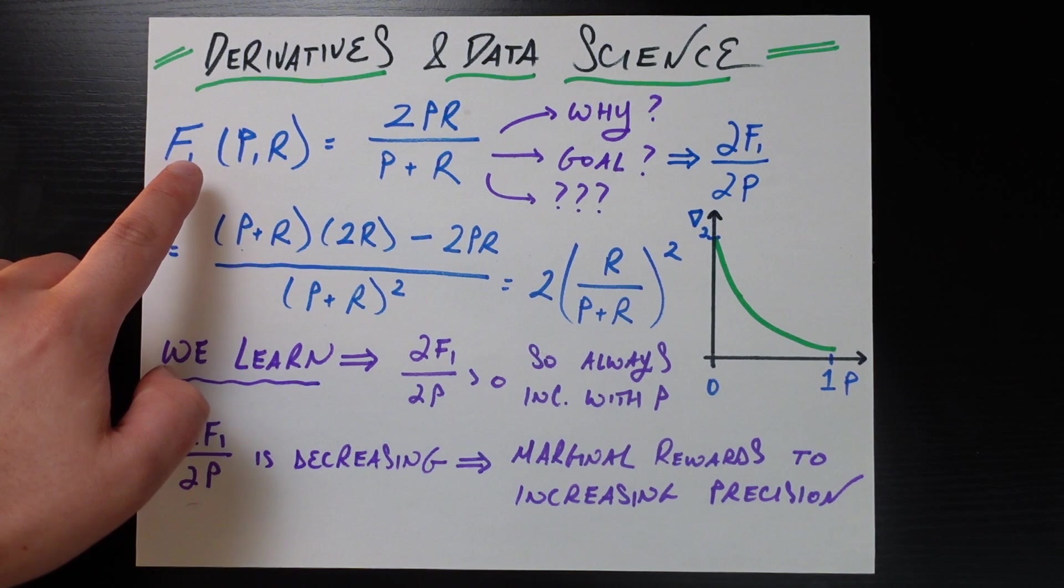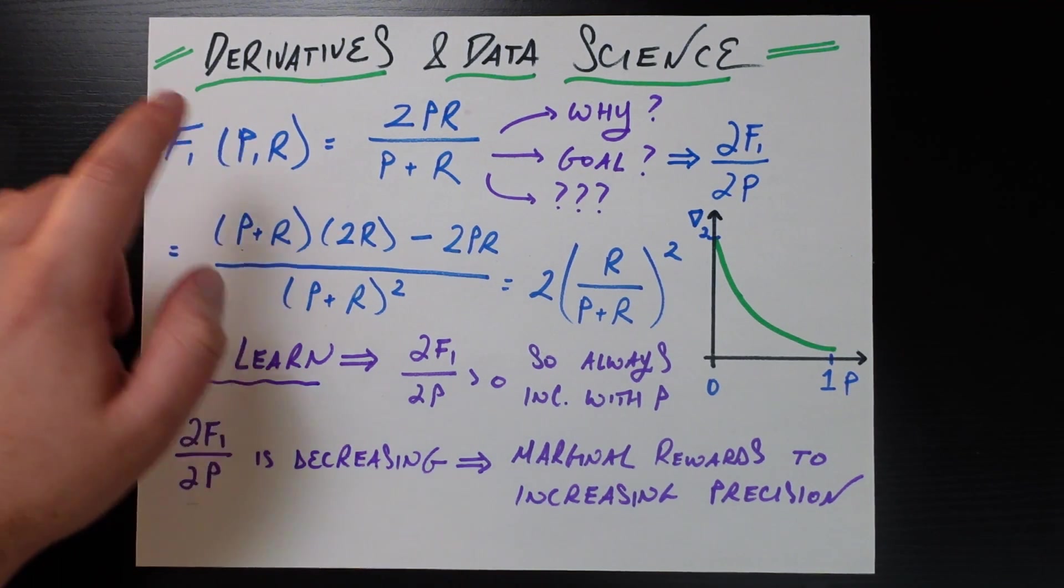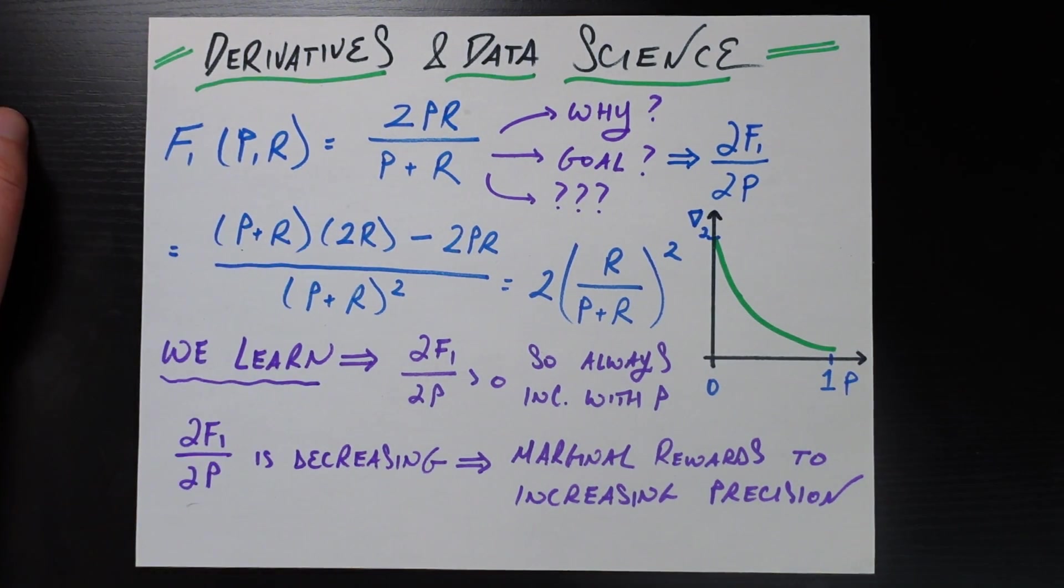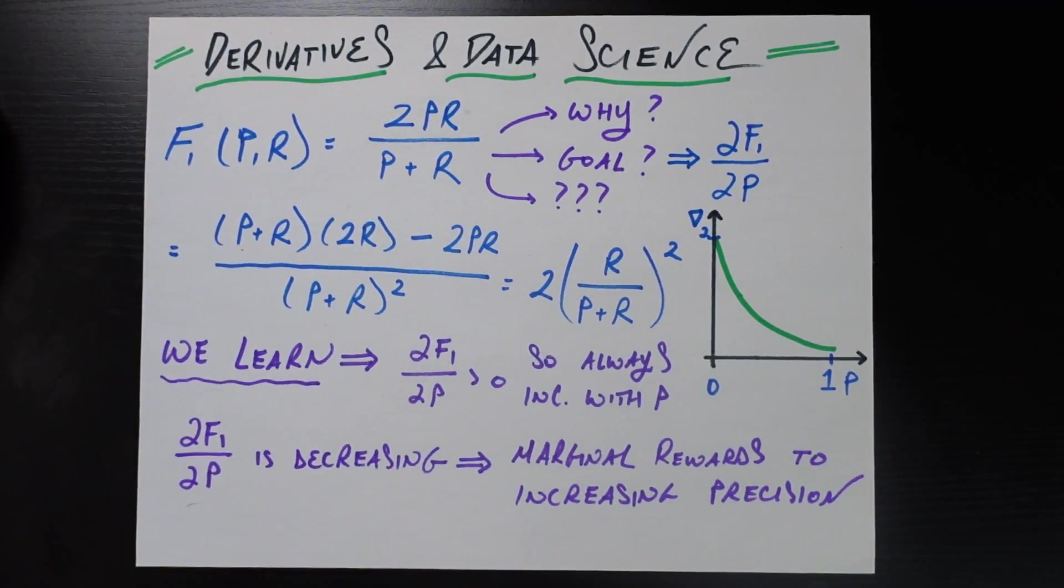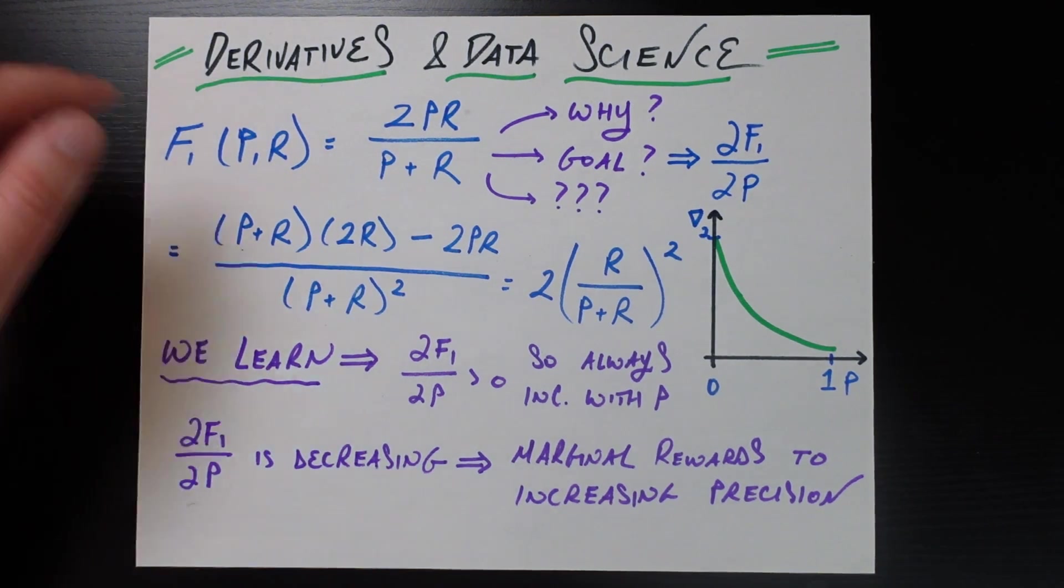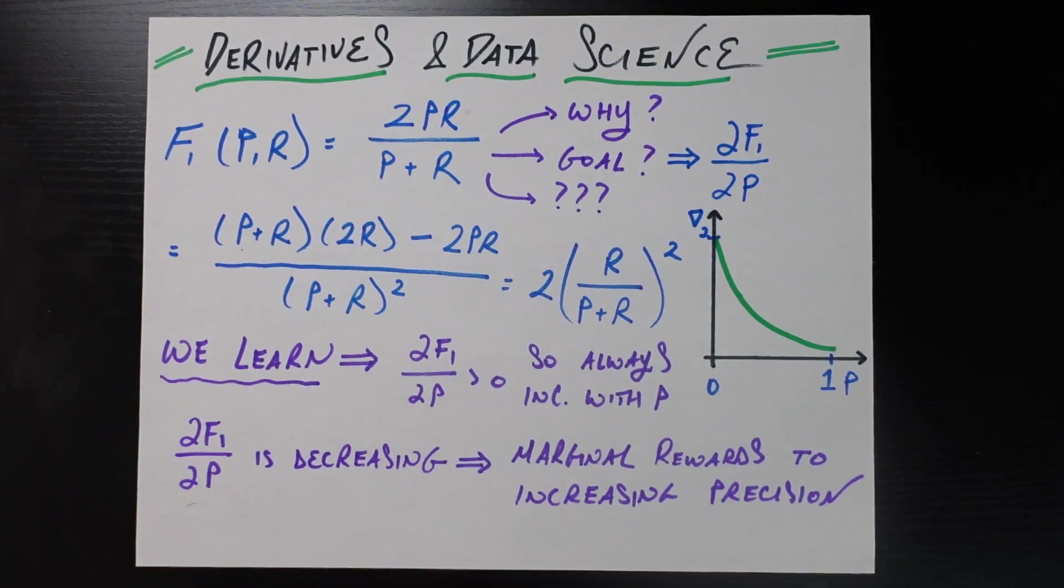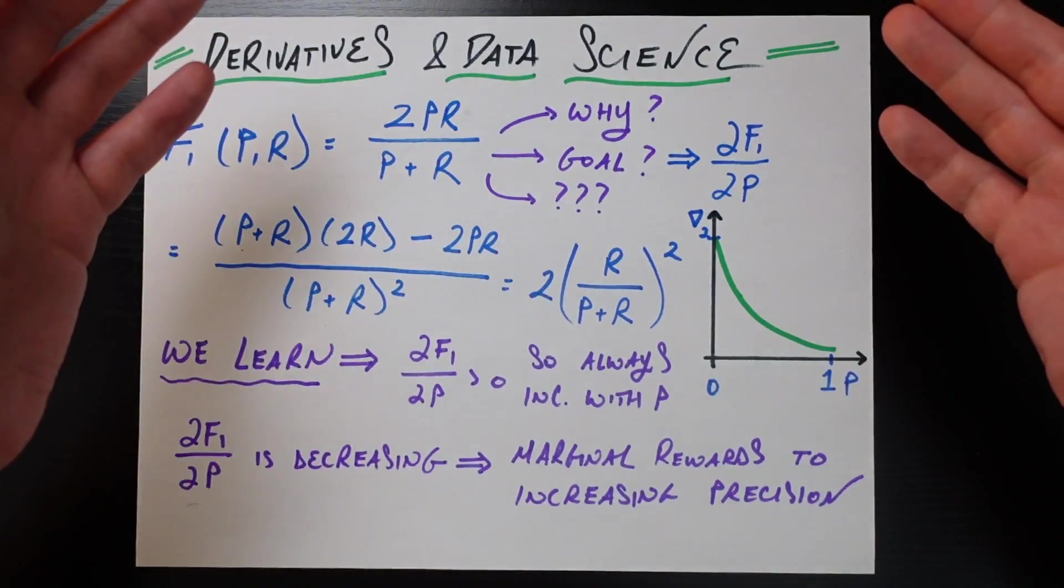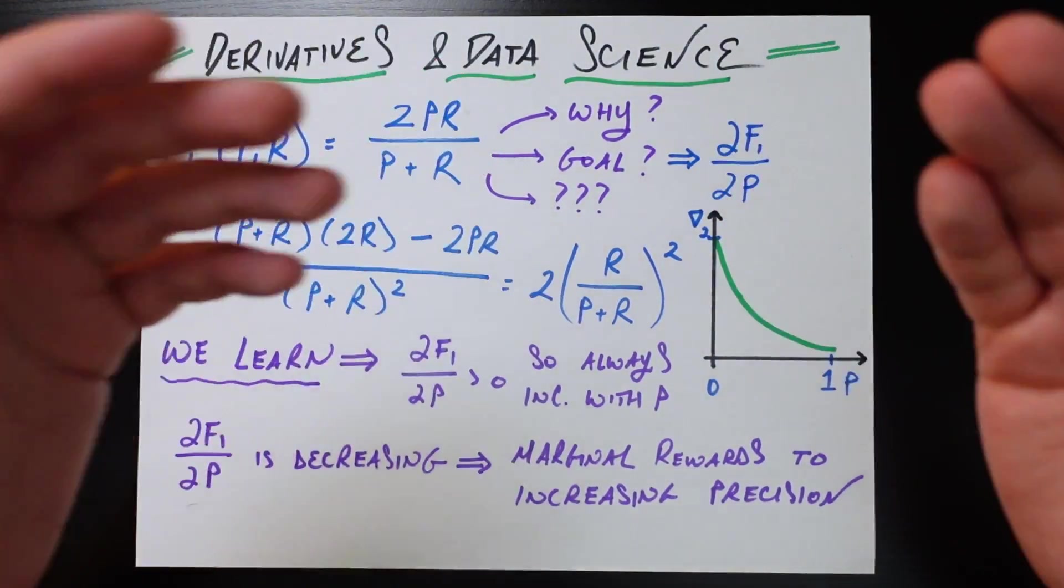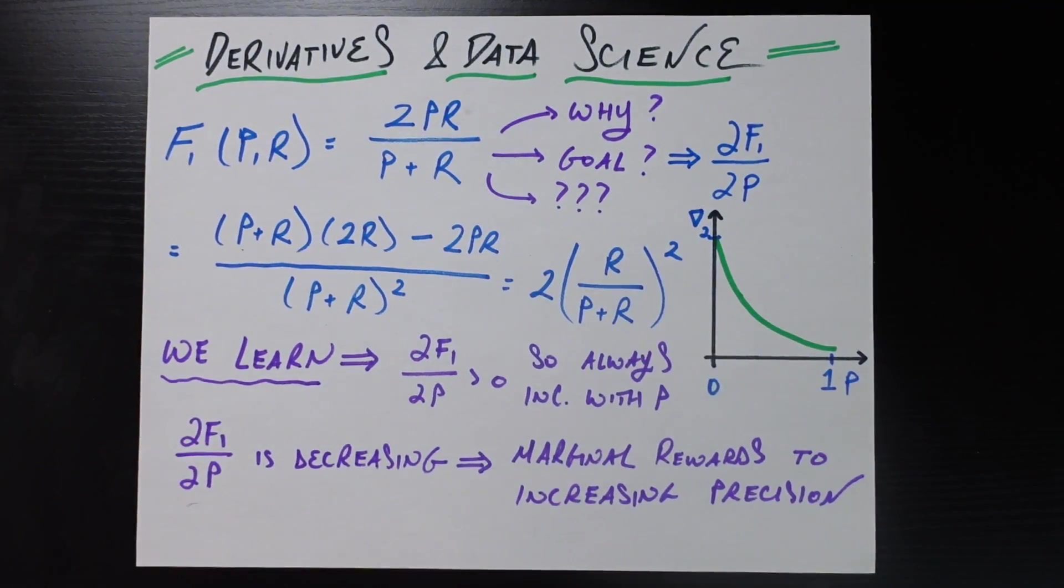And it's given by the F1 score as a function of precision and recall in some kind of classification problem is equal to two times the product of precision and recall divided by the sum of precision and recall. Now it looks simple enough but also kind of complicated and I'm not really sure where this form is coming from or what the goal of this form is. Why did whoever engineer it engineer it to look like this? It's a little bit hard to understand.